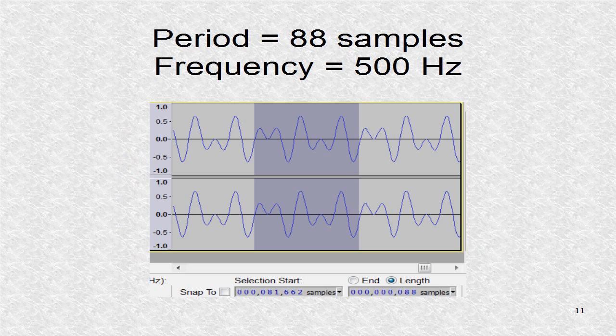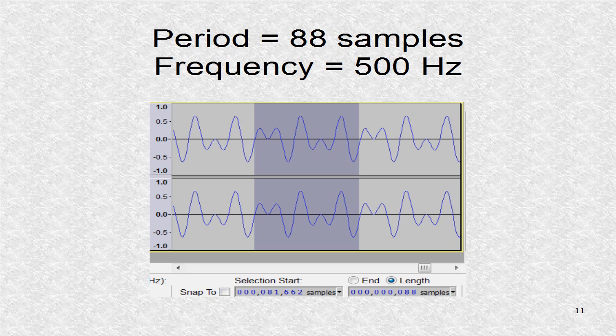We can find the period of the wave by selecting the portion of the audio that repeats. It is of width 88 samples. Since there are 44,100 samples in one second, this is 44,100 divided by 88, or 500 Hz. This makes sense since 1500 Hz is the third harmonic of 500 Hz, and 2500 Hz is the fifth harmonic of 500 Hz.